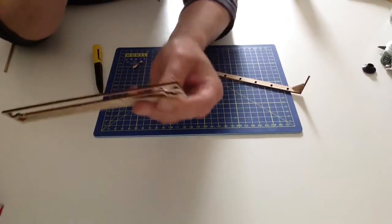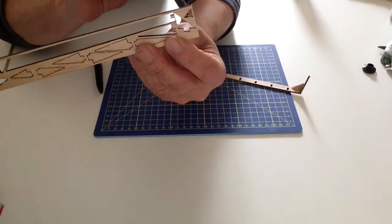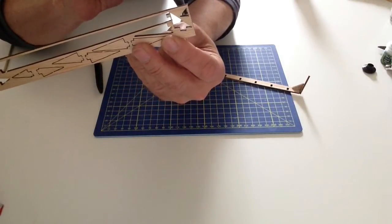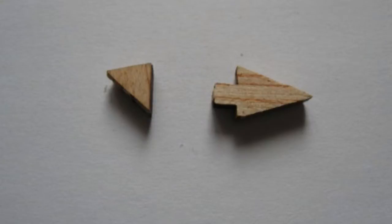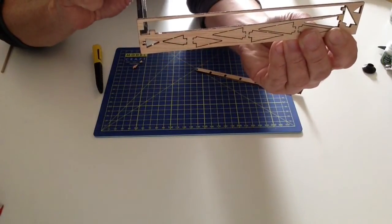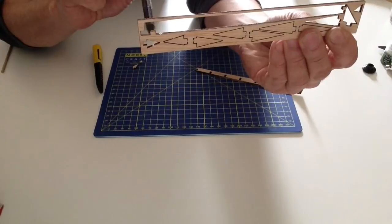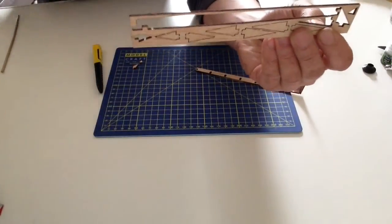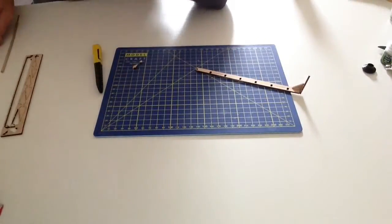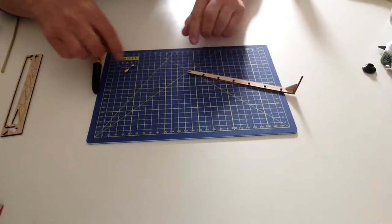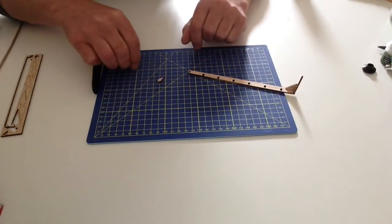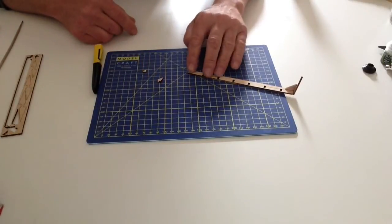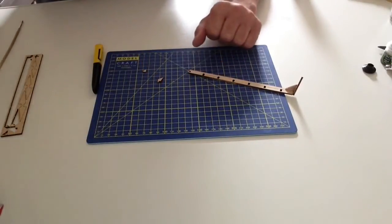Once that's dried, take your smallest triangle, remove that from the fret, and also this one on the other side which looks like an arrow. Remove that, clean all the edges, and then we're going to be fitting these two parts to the end of the aileron.